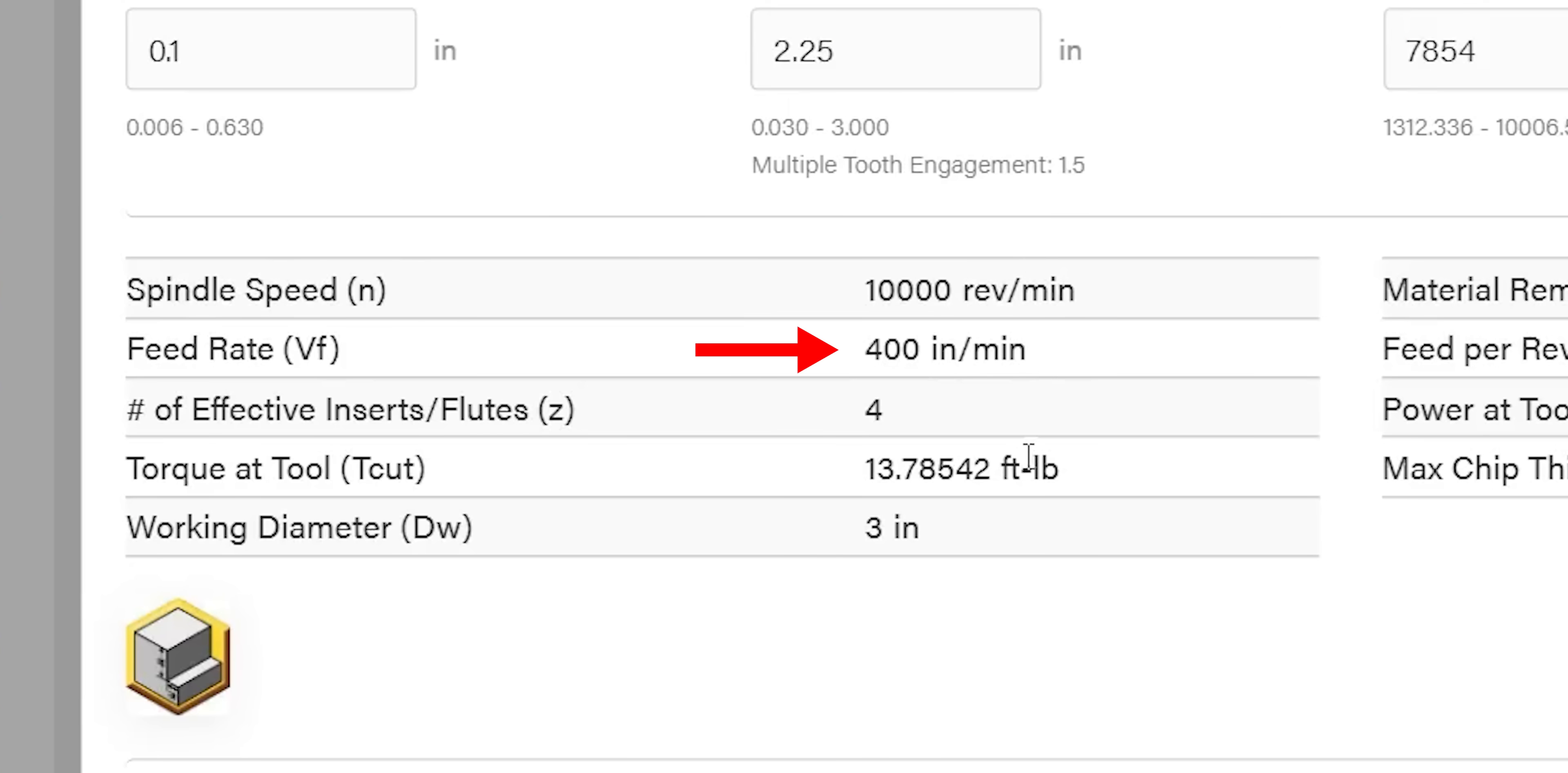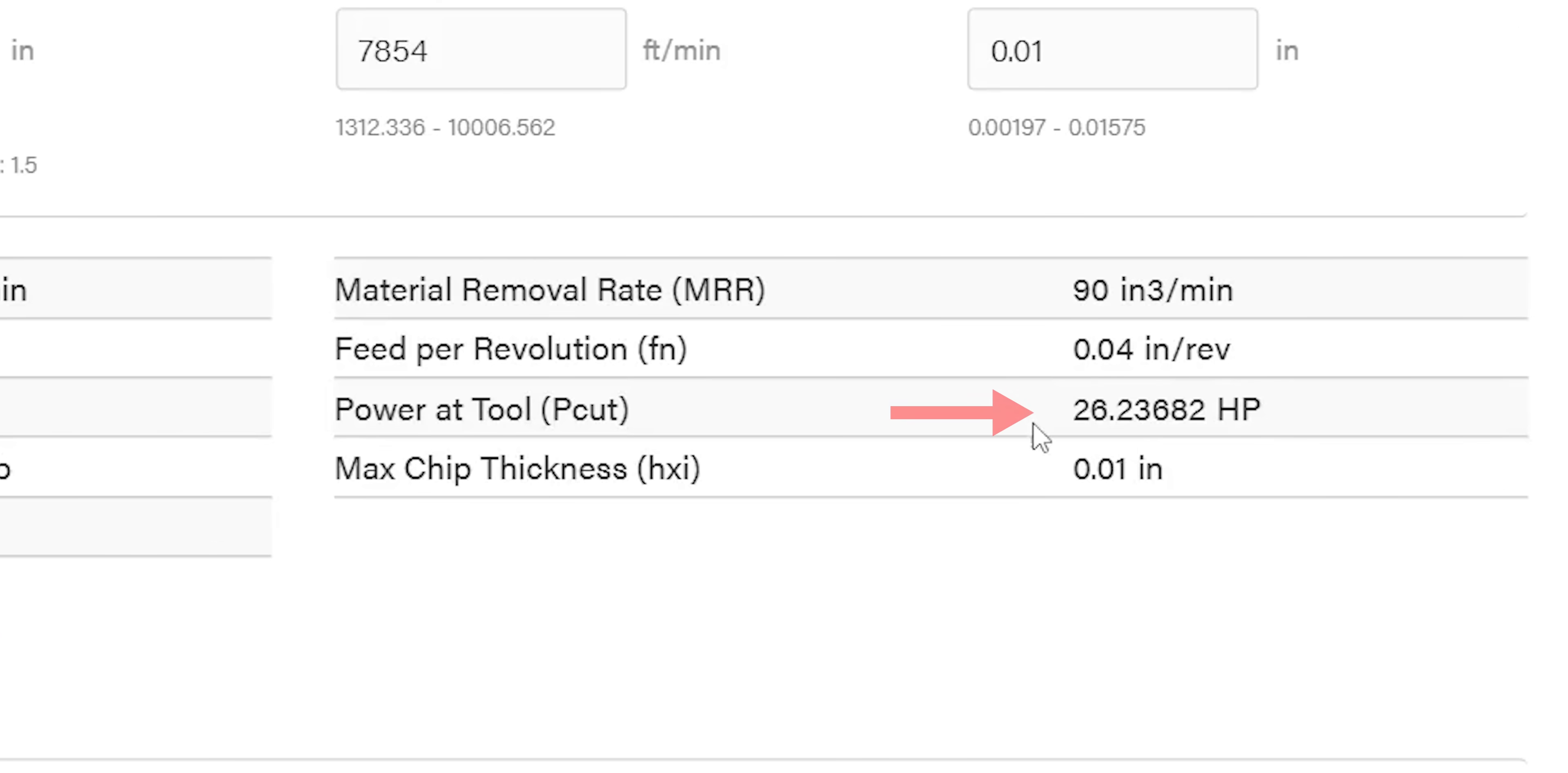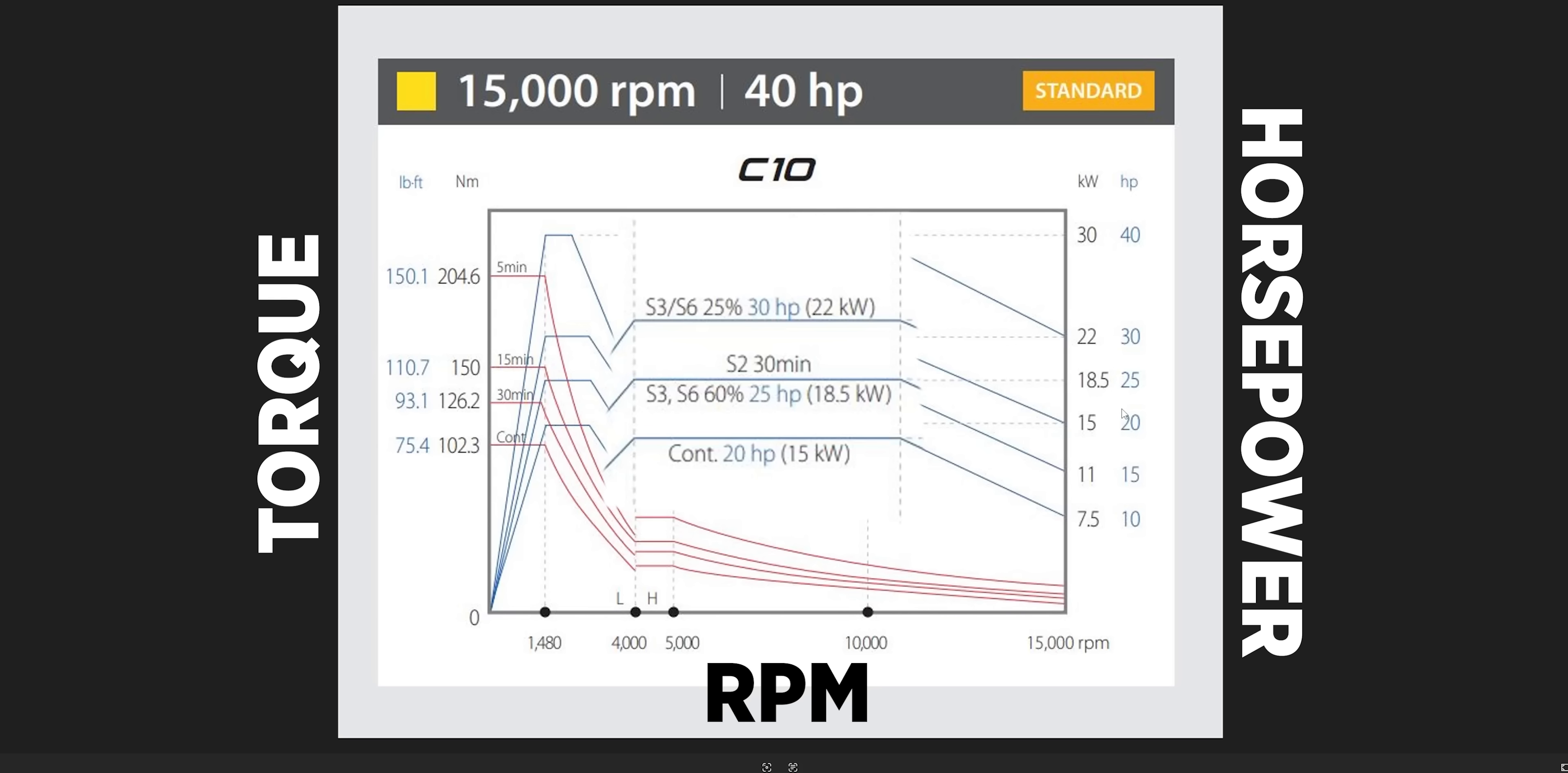Now at a 400 feed rate, we need 13.7 foot pounds of torque and 26.2 horsepower. So now we're pushing past S2 and close to S3. We can't push the machine at this continuously, but we can still comfortably run at this for a period of time. But we can see that we're still well within the limits of the machine.